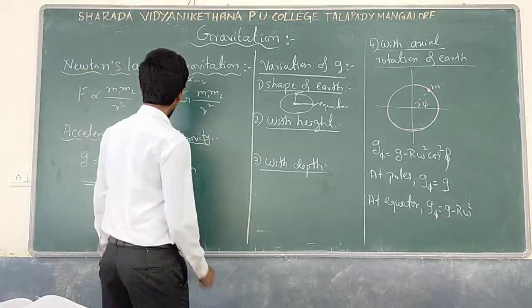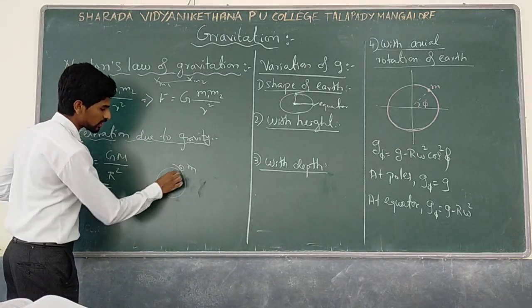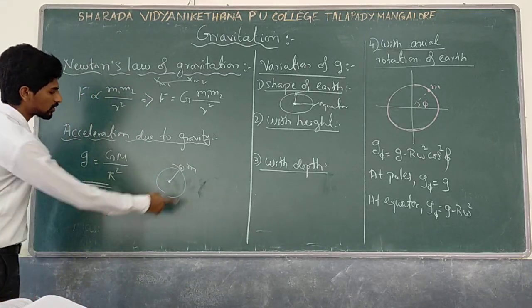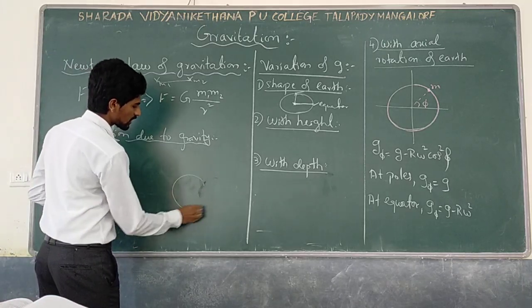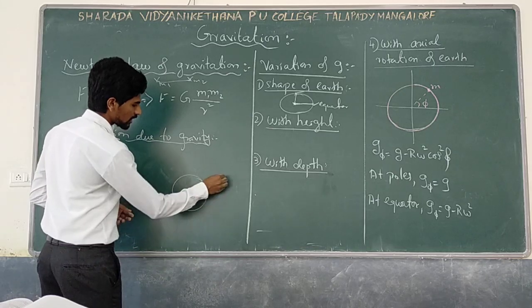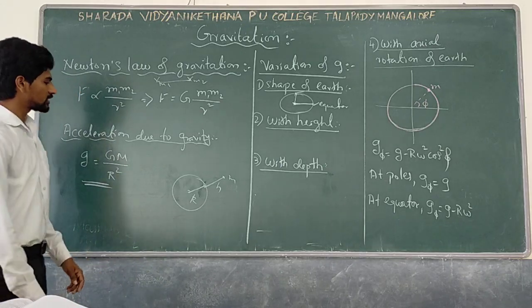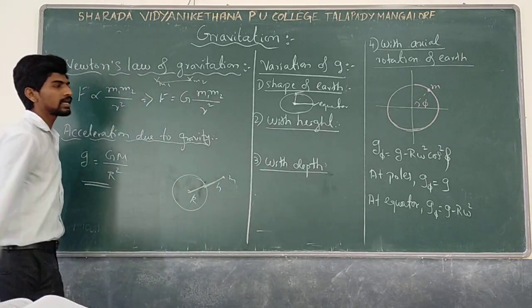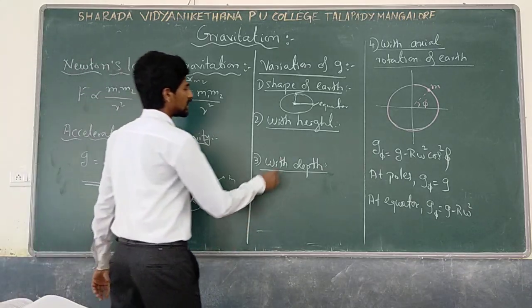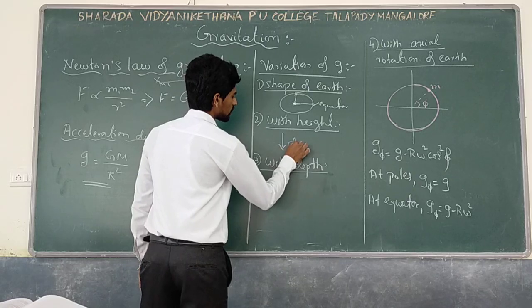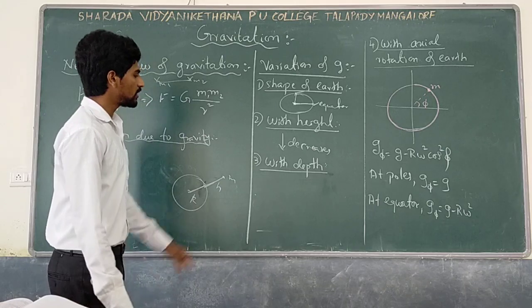With height, how will g vary? R is the distance from the centre of Earth to the object on the surface. If we increase this, and the object is at a height H, then the distance from the centre becomes R plus H. If this distance increases, g will decrease. So g decreases with height and also with depth.